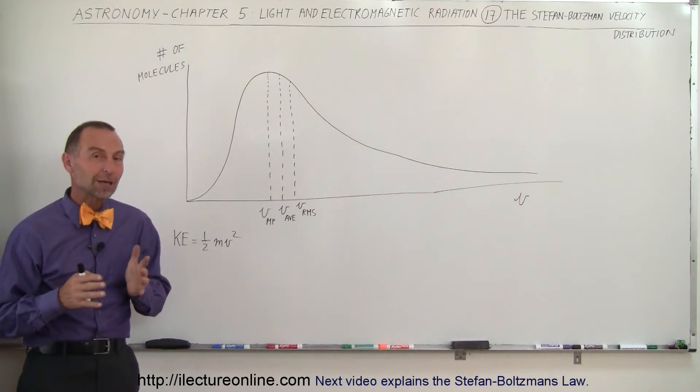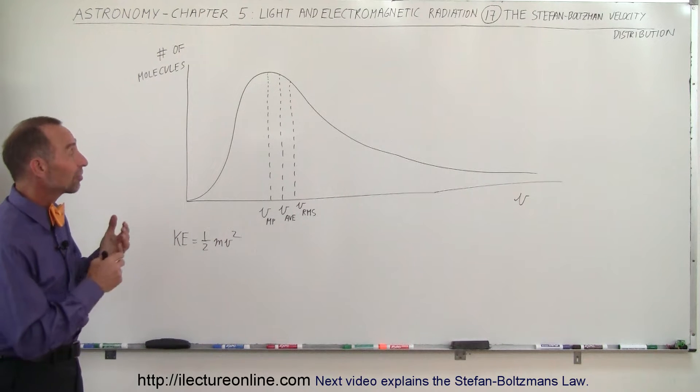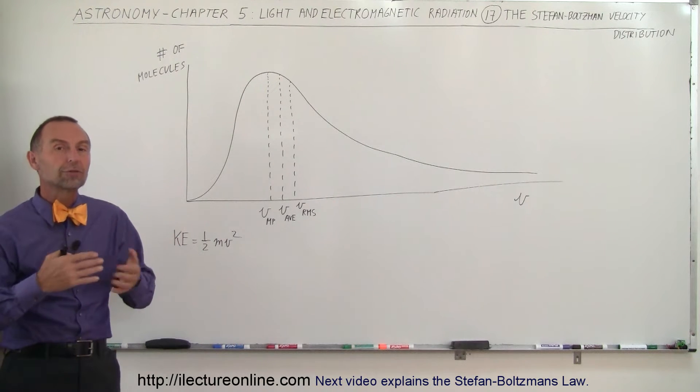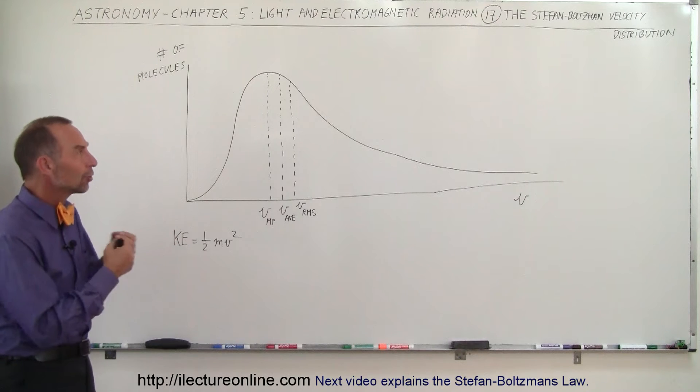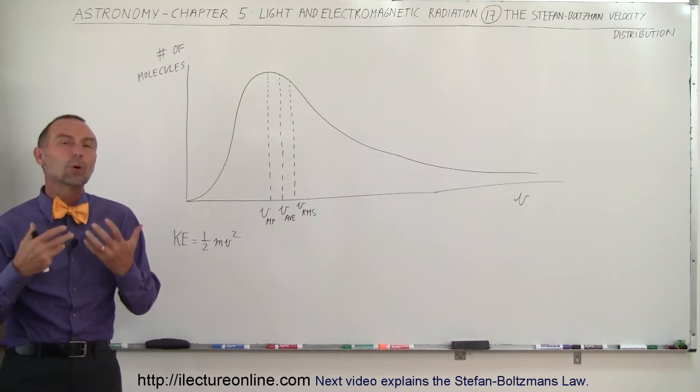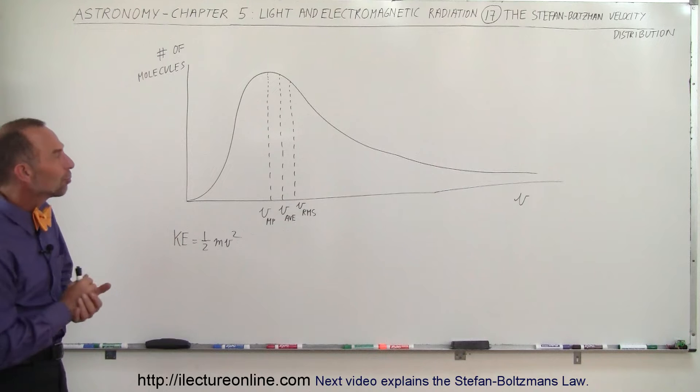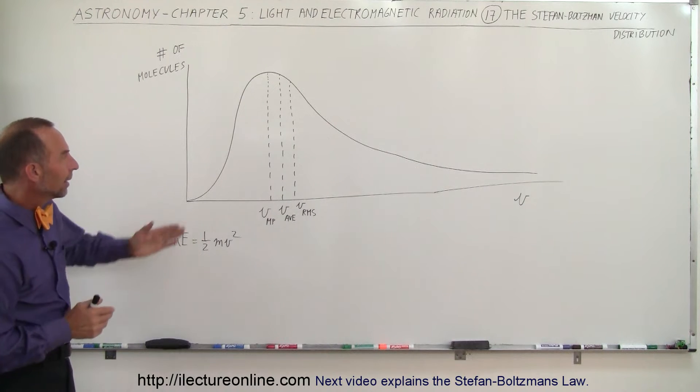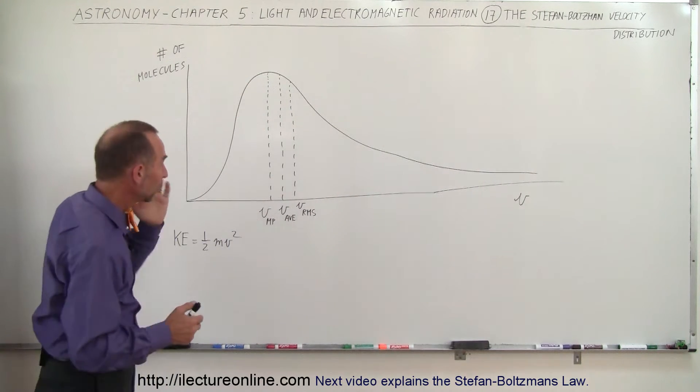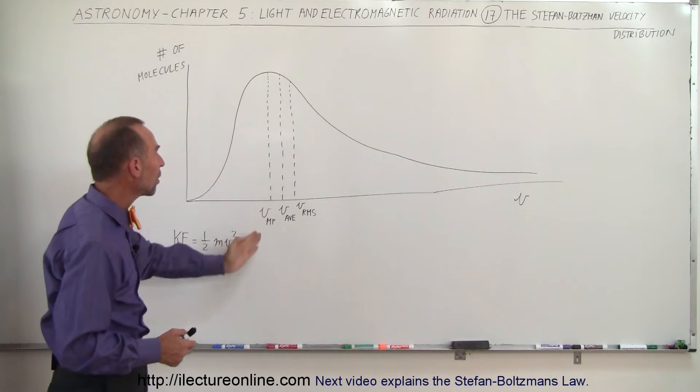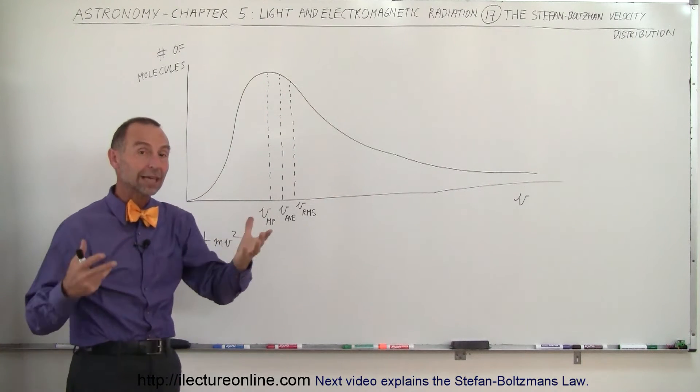This curve here, even though it kind of looks like a radiation curve, is actually the distribution curve of the velocities of molecules in a gas. And it's called the Stefan-Boltzmann velocity distribution curve. And there's a peak to it, just like the radiation curve. And at the peak, this is what we call the most probable velocity of molecules in a gas.